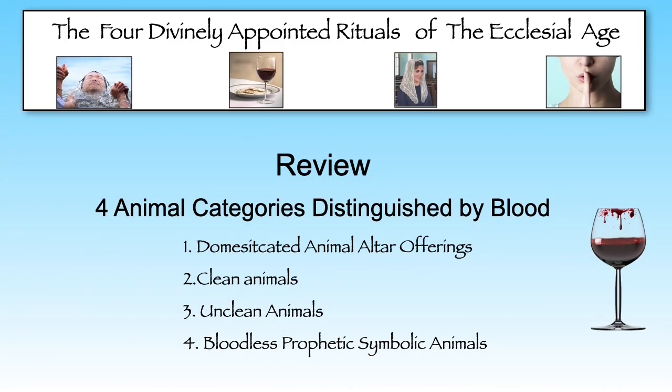First were the blood-based offerings, where eight categories of domesticated animals were offered in or near the tabernacle and could be used for no other purpose whatsoever. Second were the dietarily clean, wild animals whose blood had to be poured into the dust and covered with dust. Third was the wild, unclean animals whose blood was completely inconsequential to God, as nothing was done with the blood of those forbidden animals.